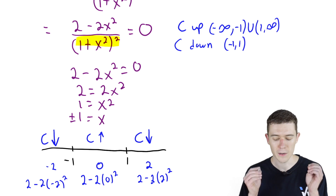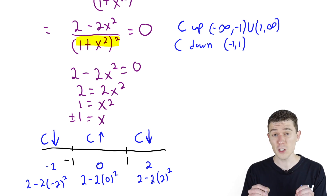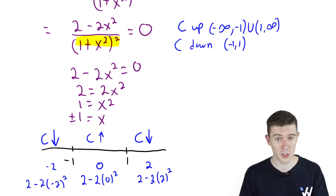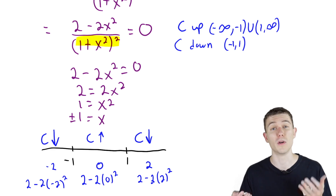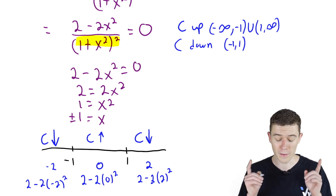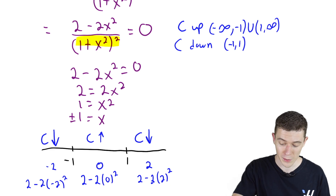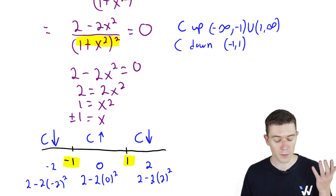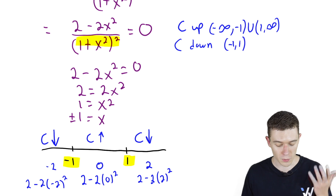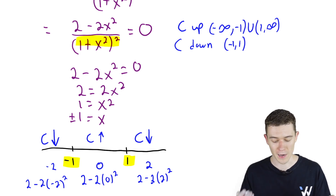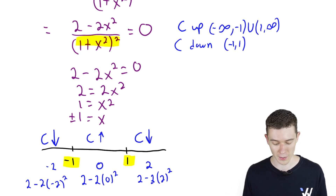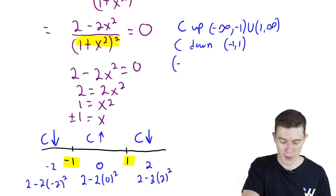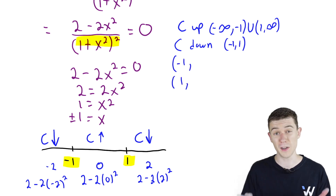Now, are there any inflection points? Inflection points are where our function changes concavity, either going from concave up to concave down or vice versa. We have two of those places, namely at negative 1 and 1. At negative 1 our function switches from concave down to concave up, and at 1 it switches from concave up to concave down, so both x values are inflection points.